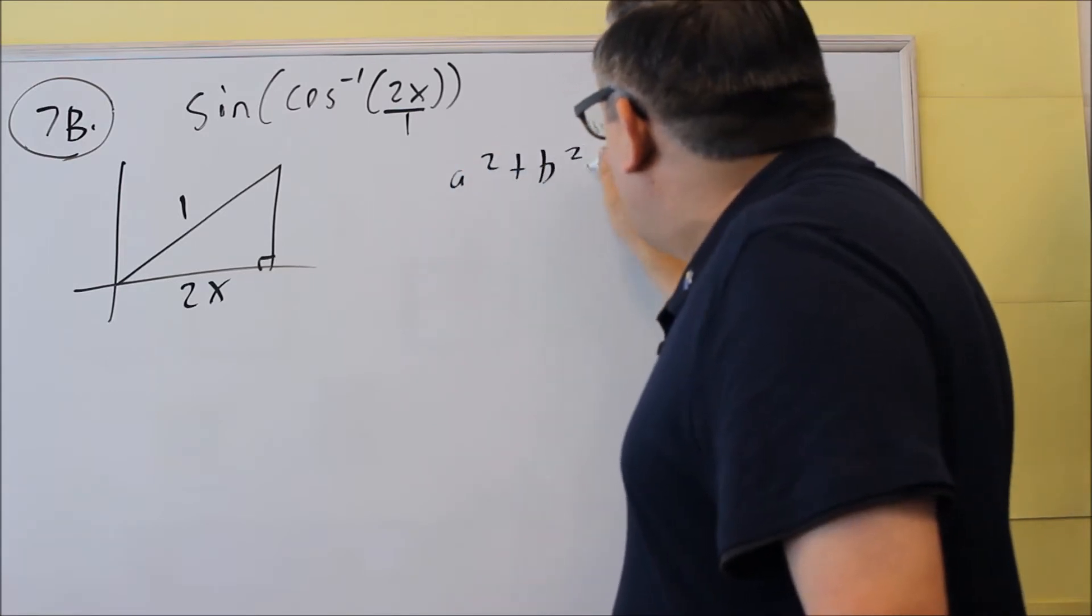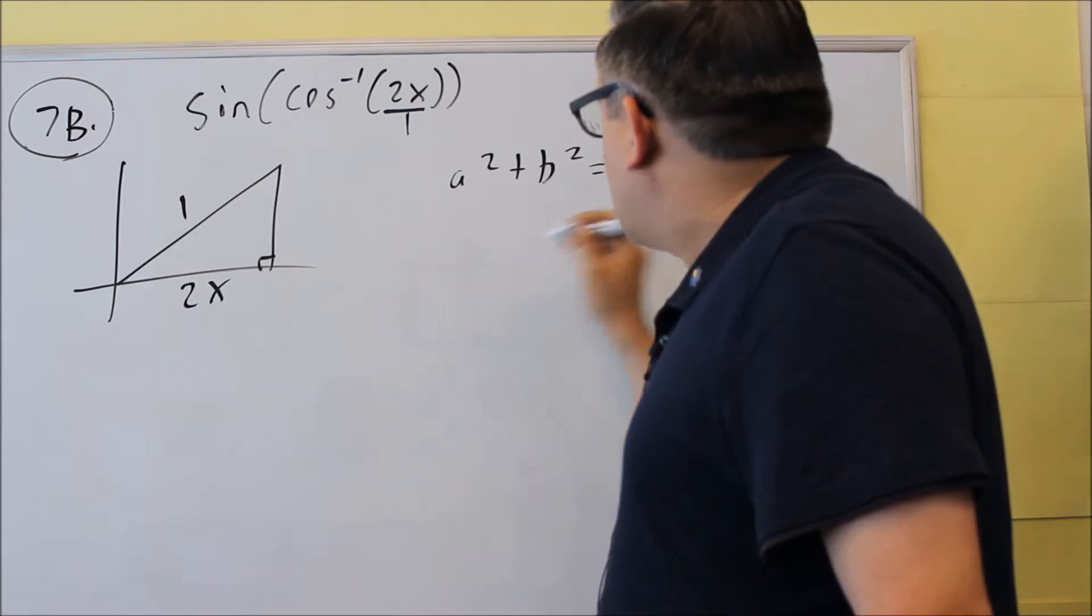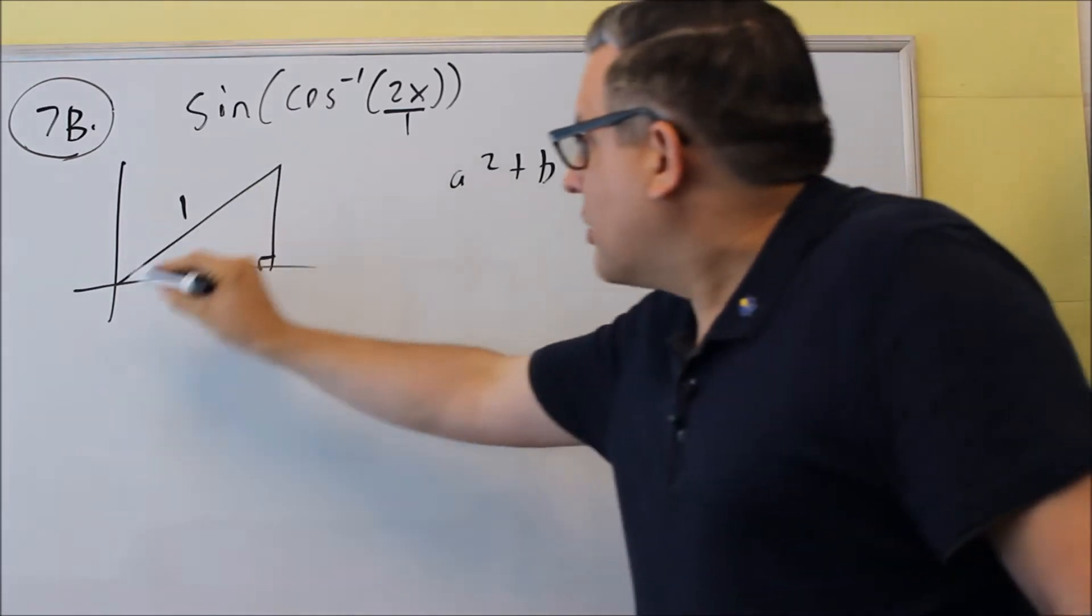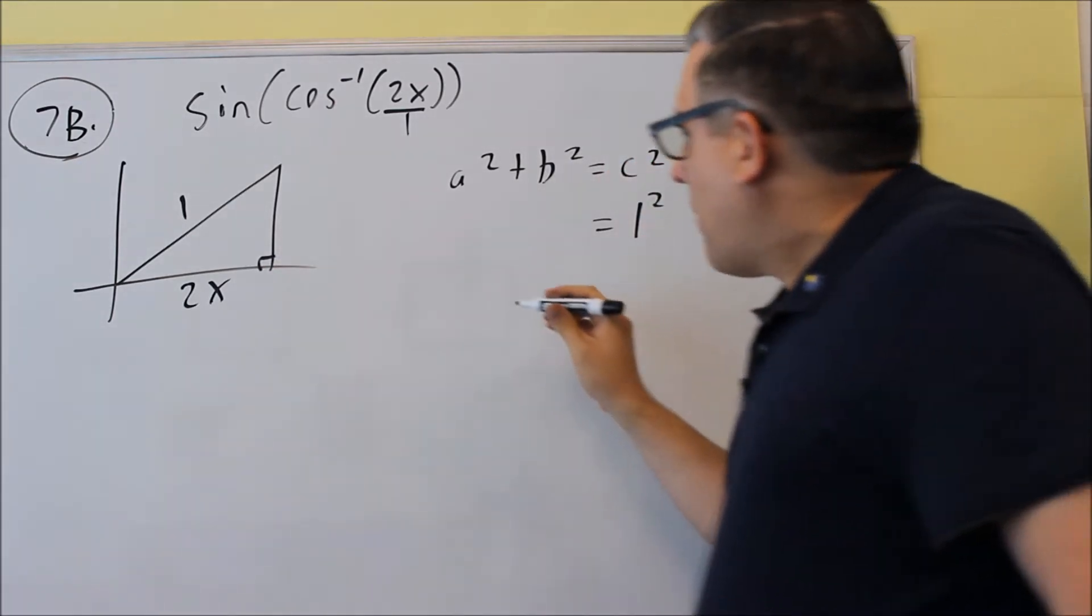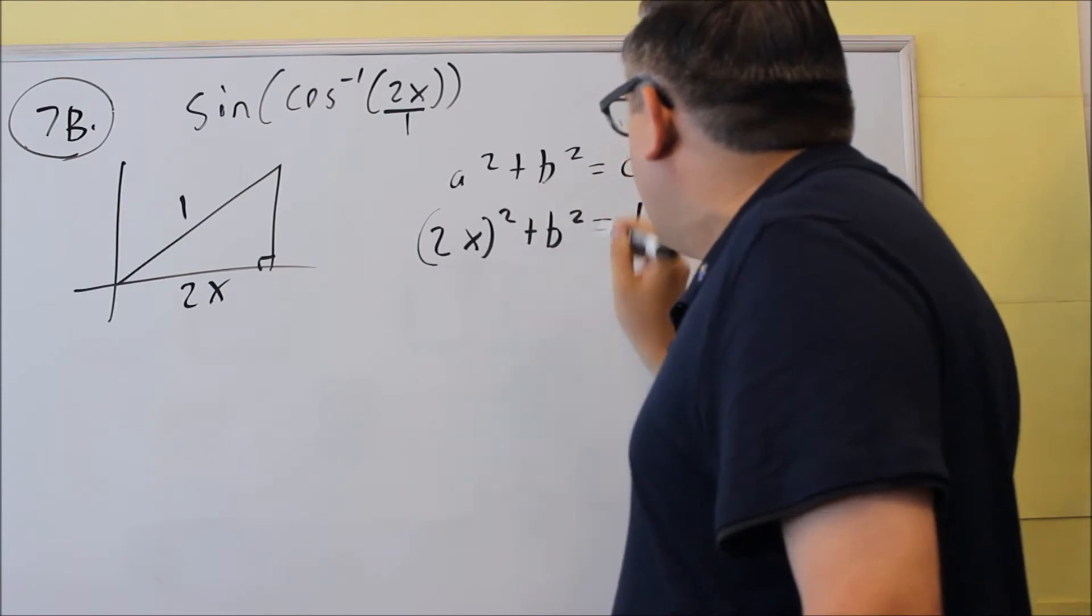We're going to do Pythagorean theorem again, a squared plus b squared equals c squared. And in this case, the c is 1, because that's the longest side, the side opposite the right angle. And then we have a 2x that's here that we'll put in.